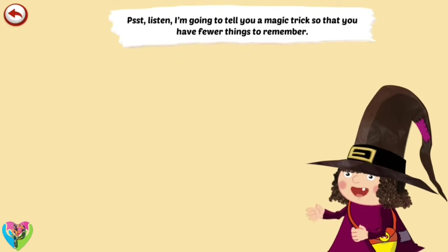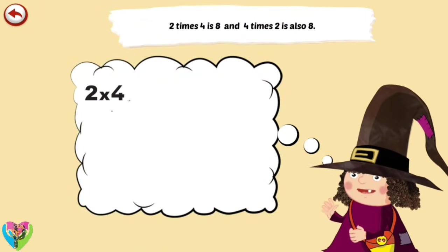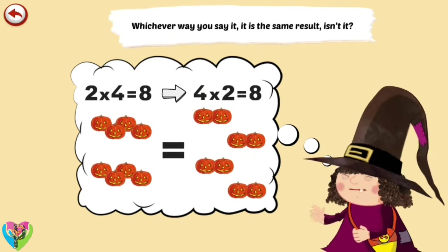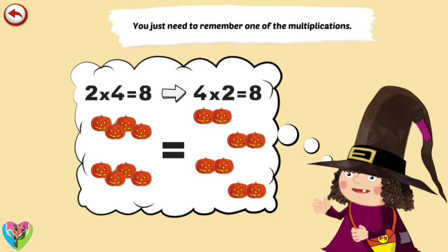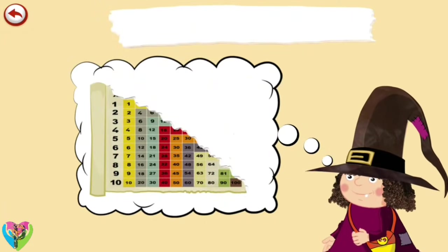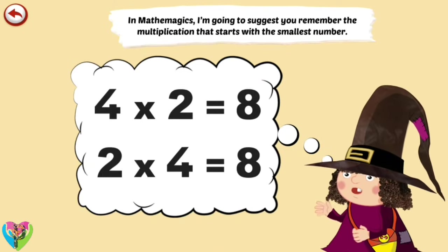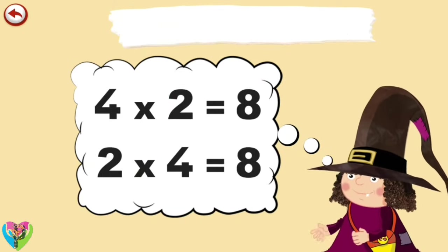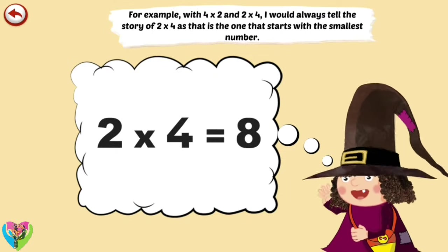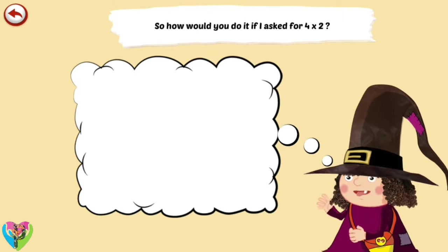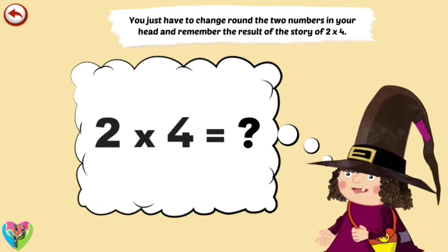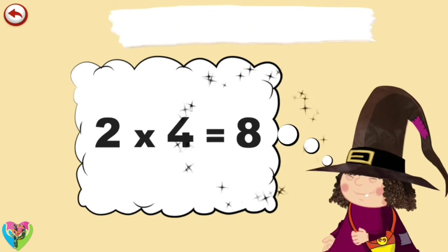I'm going to tell you a magic trick so that you have fewer things to remember. Two times four is eight, and four times two is also eight. Whichever way you say it, it is the same result. You just need to remember one of the multiplications. As that trick works with every multiplication, we only have to memorise half of the tables. In Mathemagics, I'm going to suggest you remember the multiplications that start with the smallest number. For example, with four times two and two times four, I would always tell the story of two times four, as that is the one that starts with the smallest number. So how would you do it if I asked for four times two? You just have to change around the two numbers in your head and remember the result of the story of two times four.